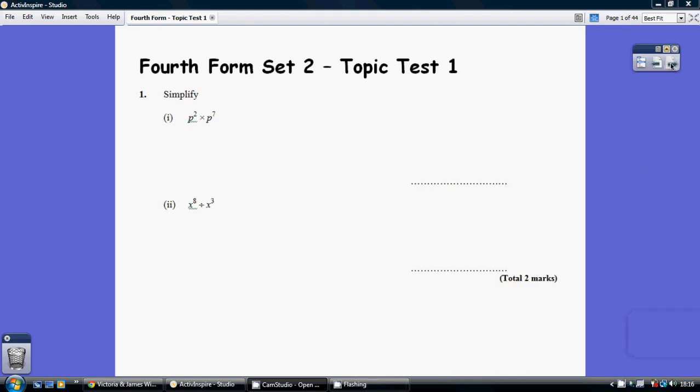Question 1. The index law is very straightforward, provided the big numbers are the same - P and P, X and X. The index law says when you're multiplying you add the powers: 2 and 7 is 9. But when you're dividing you take away the powers: 8 take away 3 is 5.